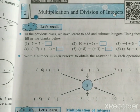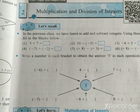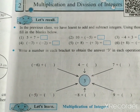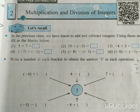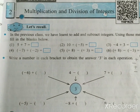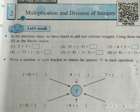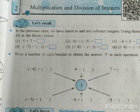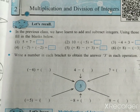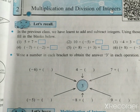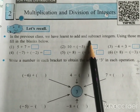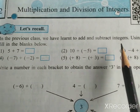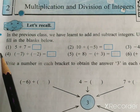Positive numbers, 0, and negative numbers together form a group of numbers called the group of integers. In the last year, we have also learned how to add and subtract integers. Using those methods, fill in the blanks below.